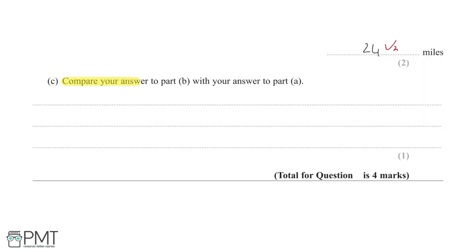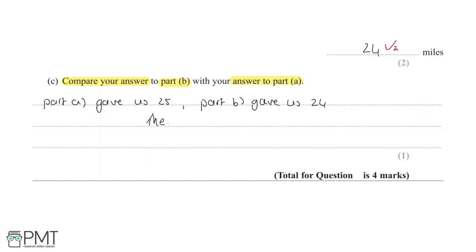Part (c) asks us to compare our answer to part (b) with our answer to part (a) for one mark. Part (a) gave 25 and part (b) gave 24, so the two answers are quite close. You can also state that part (b) gave a smaller result. Either way, you get one mark for a correct comparative statement.